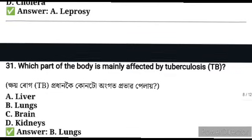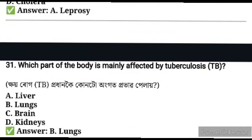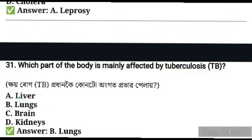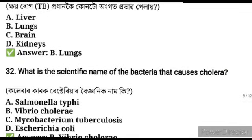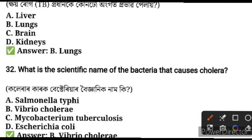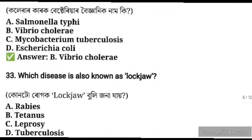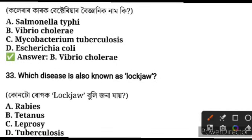Which part of the body is mainly affected by tuberculosis? Tuberculosis mainly affects the lungs. What is the scientific name of the bacteria that causes cholera? The answer is Vibrio cholerae.